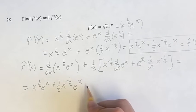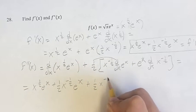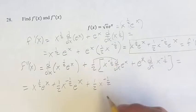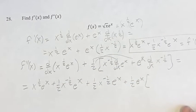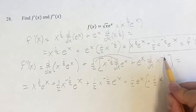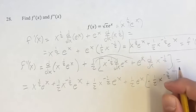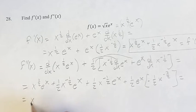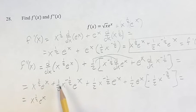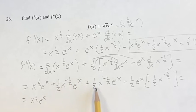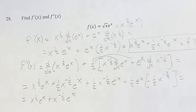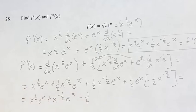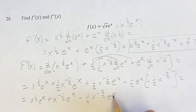Now we solve the second term and add everything together. So plus 1/2 x to the negative 1/2 times the derivative of e to the x — which is e to the x — plus 1/2 e to the x times the derivative of x to the negative 1/2. Again, power function: bring down the exponent, and the new exponent is negative 1/2 minus 1, which is negative 3/2. Continuing on: we get x to the 1/2 e to the x, then the like terms 1/2 x to the negative 1/2 e to the x plus another 1/2 x to the negative 1/2 e to the x combine to give x to the negative 1/2 e to the x, and then 1/2 times negative 1/2 gives minus 1/4 x to the negative 3/2 e to the x. This is your second derivative.